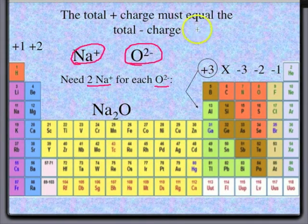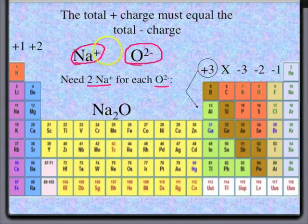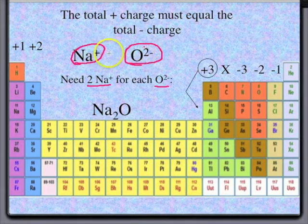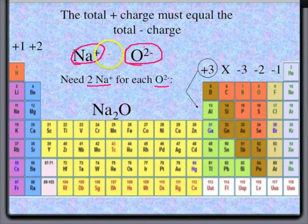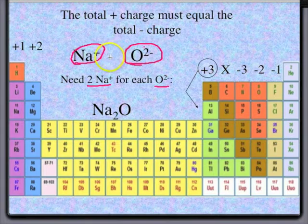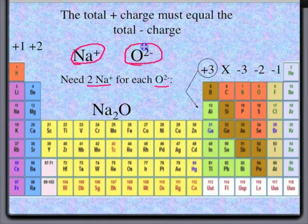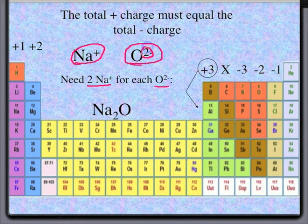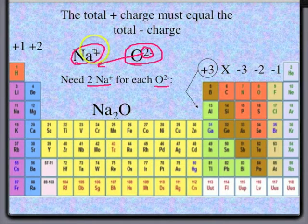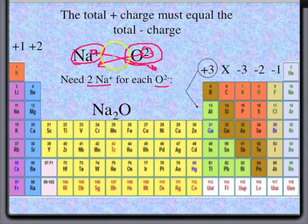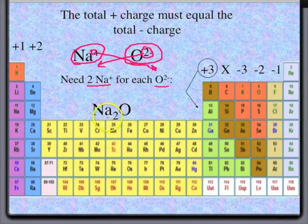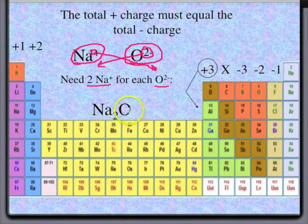Now, an easy mnemonic is when the charges are unequal. If they're equal, then you just put them together. You don't have to worry because the charges are going to balance out. But if they're unequal, here you have a plus one, here you have a two minus. You can get a quick idea by taking the absolute value of the charge of each one and using that as a subscript for the other. So, the two on the oxygen becomes Na2O. And that way you're going to end up with two positives to match two negatives.